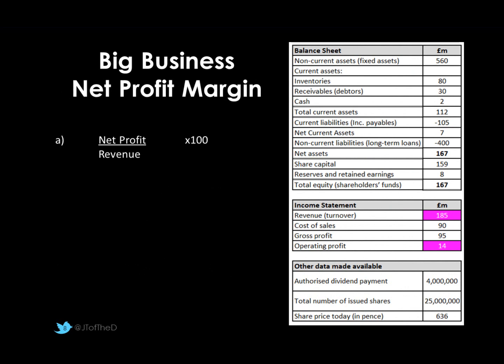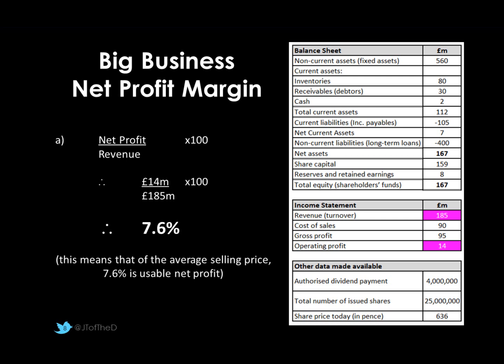Net profit takes away all other expenses — wages, premises, utility bills, and any other costs incurred in making the sale — so it's a smaller number. Our net profit is only £14 million. Divided by revenue of £185 million × 100%, this gives a net profit margin of just 7.6%. Whether that's good or bad depends on context: is it going up or down? What do competitors do? What are other profit centres doing? For every pound of selling price, 7.6 pence is usable profit. Many businesses are very pleased with this, but it depends on context.